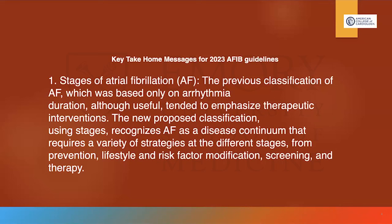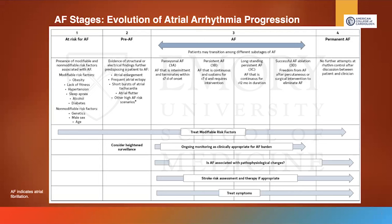One of the biggest things in the new guidelines is the way we classify AFib. The previous classification focused on the duration of the arrhythmia, while the new classification focuses on it as a continuum, noting that atrial fibrillation is a disease of progression. It now focuses on stages one through four, with stage three subdivided into 3A through 3D.